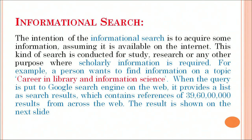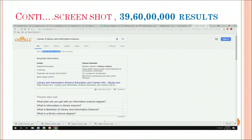Now coming to the informational search. The intention of the informational search is to acquire some information assuming it is available on the internet. This kind of search is conducted for study, research, or any other purpose where scholarly information is required. For example, a person wants to find information on the topic 'career in library information science.' When the query is put to the Google search engine on the web, it provides a list of search results containing references of around 396 million results from across the web. You can see there are 396 million results showing careers in library information science.